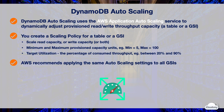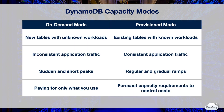DynamoDB auto scaling also supports GSIs. Every GSI has provisioned capacity independent of the base table. If you enable auto scaling for a table that has one or more GSIs, AWS recommends applying the same auto scaling settings to all GSIs for best performance.